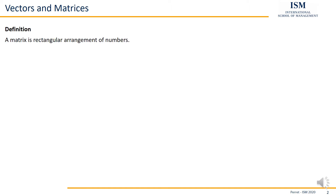Starting simply with a definition: a matrix is nothing else than a rectangular arrangement of numbers. That's a simplification, because mathematically speaking we're talking about linear transformations, but here in our context we first assume it's just a rectangular arrangement of numbers.